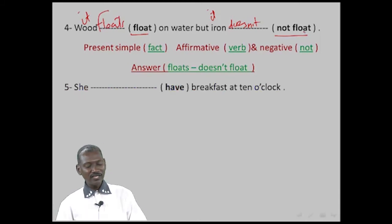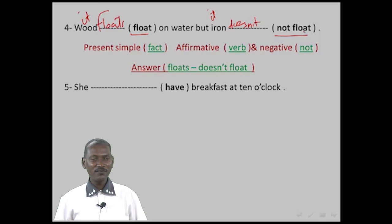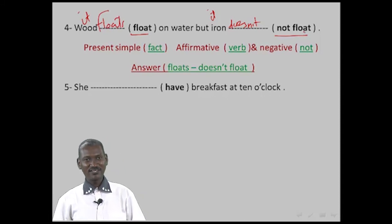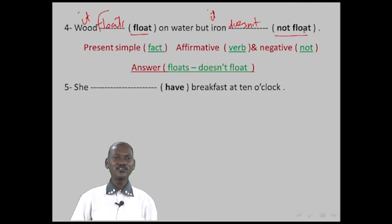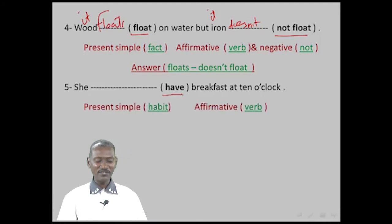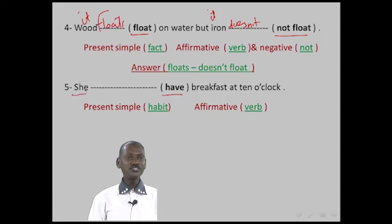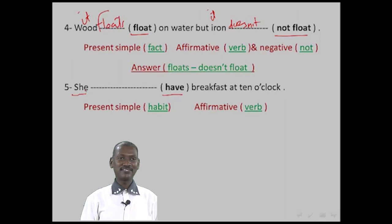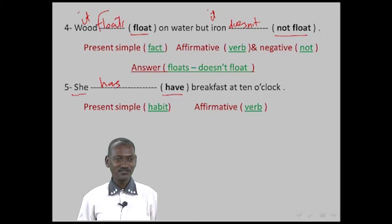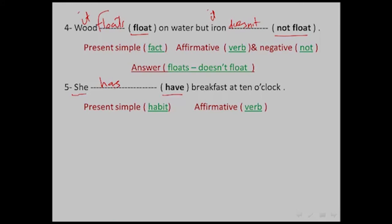Example five: 'She have breakfast at 10 o'clock.' This is Present Simple because it is a habit. It is affirmative because the verb 'have' is in brackets. The subject is 'she', so we add S to the verb — but 'have' + S changes to 'has'. Answer: 'She has breakfast at 10 o'clock.'